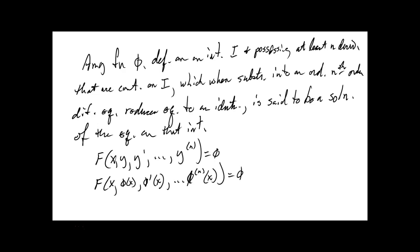You cannot think of a solution of an ordinary differential equation without simultaneously thinking of the interval. The interval could be all real numbers or it could be limited because either the function or its derivatives are not defined everywhere. The interval in the definition is called the interval of definition, interval of existence, interval of validity, or domain of the solution. It can be an open interval (a,b), a closed interval [a,b], or an infinite interval such as (a,∞), (−∞,∞), or (−∞,b).